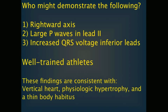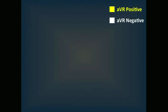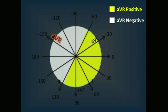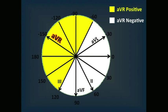If the axis is less than 120 degrees, will AVR be positive or negative? AVR will be negative if the axis is less than 120 degrees — anywhere from negative 60 to 120, AVR is negative. AVR will be positive if the axis is greater than 120. So in athletes with a vertical heart, AVR should be negative. Also, don't forget about prominent inferior voltage — that's important too.